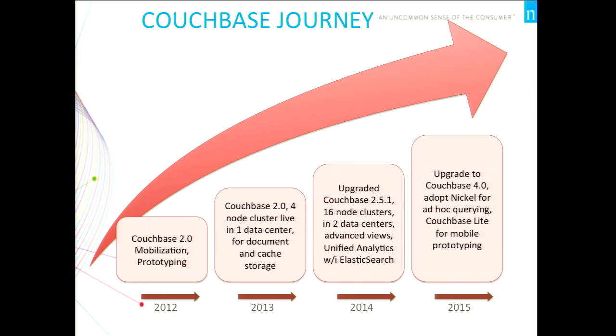We like the product, so we went from there to a small production footprint. It went well, and then we upgraded to version 2.5.1, expanding our four-node cluster to a 16-node cluster across multiple data centers. We used advanced views capability and the power of Elasticsearch to perform unified analytics on top of data in Couchbase. Starting this year we began beta testing N1QL, and we look to upgrade to Couchbase 4.0 for multidimensional scaling and ad hoc querying. We also looked at Couchbase Lite for mobile prototyping.